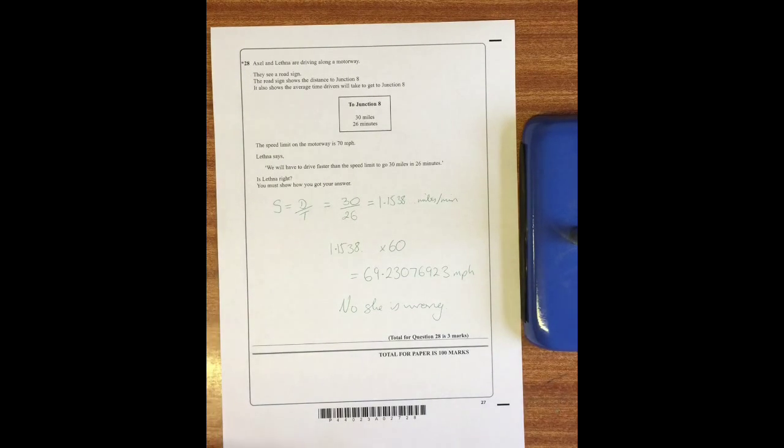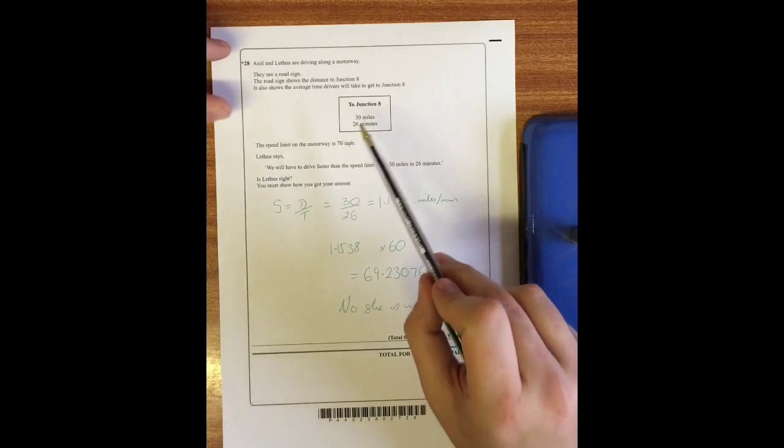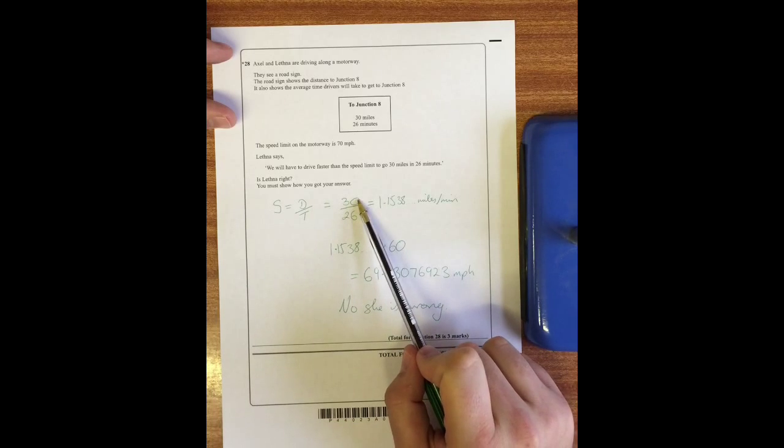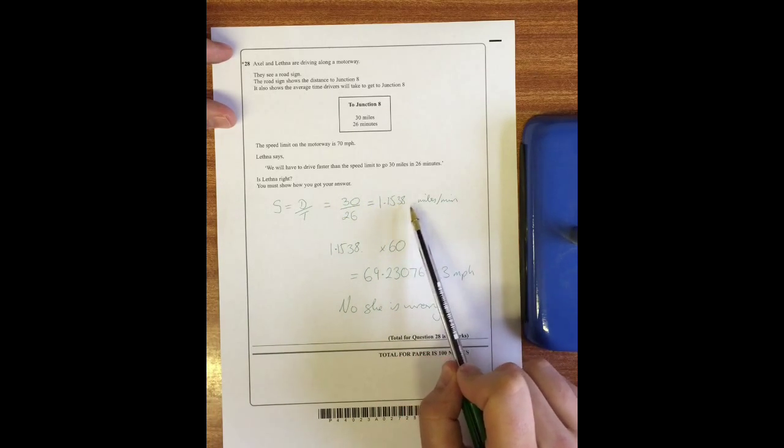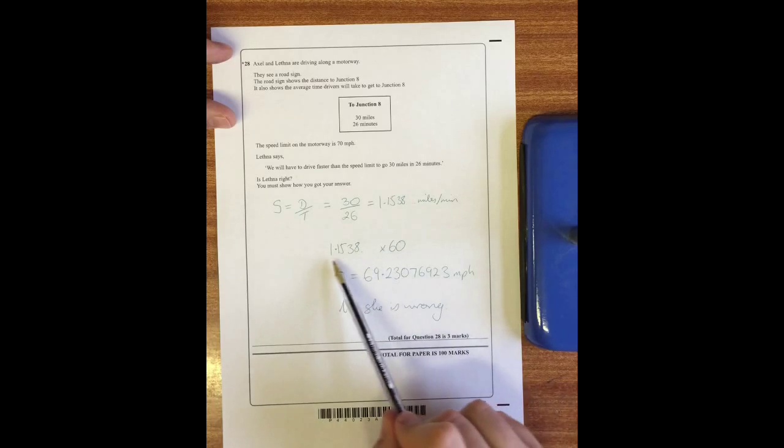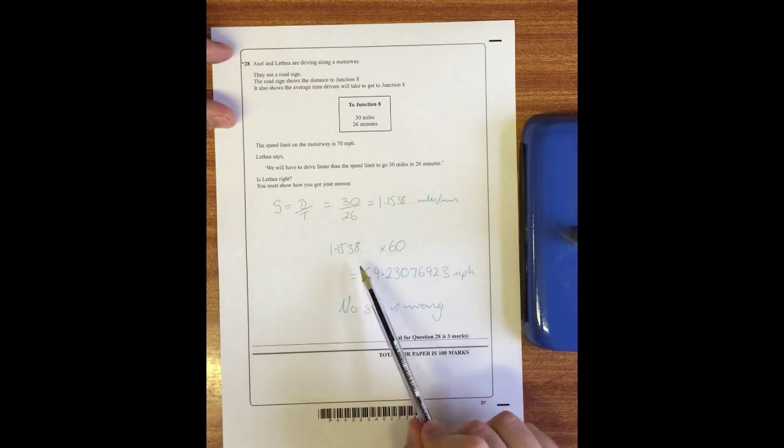Question 28: Axel and Lefner are driving along the motorway. They see a road sign. The road sign shows the distance to junction eight and also shows the average time drivers will take to get to junction eight. The speed limit for the motorway is 70 miles per hour. Lefner says we will have to drive faster than the speed limit to go 30 miles in 26 minutes. Is she correct? Well the best way to do this is to work out what speed you would have to do. We know that speed equals distance over time, so 30 miles divided by 26 minutes gives us 1.1538 miles per minute. Leave the entire display on your calculator because if we times that by 60 to get the miles per hour, we get 69.23076923 miles per hour, and we can see that that is less than 70. So no, she is wrong.